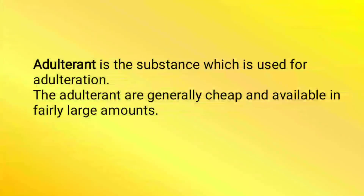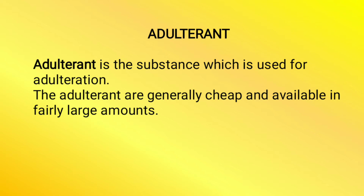Moving to the next — what is meant by adulterant? So, adulterant is a substance which is used for adulteration. Adulteration ke liye istamal ki jane wali substance ko hum adulterant kehte hain. The adulterants are generally cheap and available in fairly large amounts. Because of being cheap, it can be used to replace the genuine drug and more profit can be earned out of it.